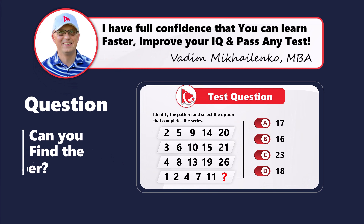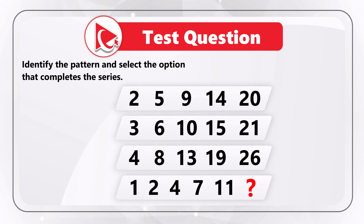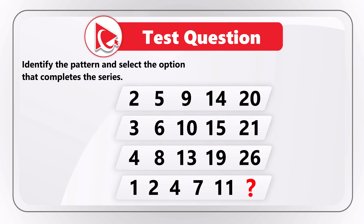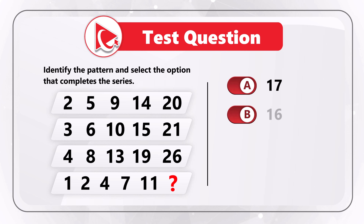This is one of my favorite questions because it tests your analytical skills as well as your ability to identify sequences. You are presented with a series of numbers and need to identify the pattern, then select the option that completes the series. The numbers are: Row 1: 2, 5, 9, 14, 20. Row 2: 3, 6, 10, 15, 21. Row 3: 4, 8, 13, 19, 26. Row 4: 1, 2, 4, 7, 11, and then a missing number. The choices are: Choice A – 17, Choice B – 16, Choice C – 23, and Choice D – 18.